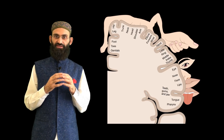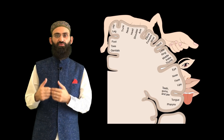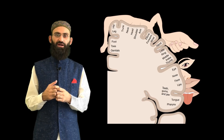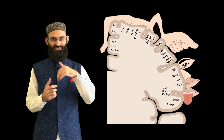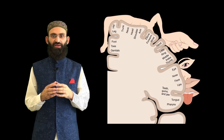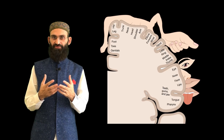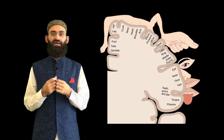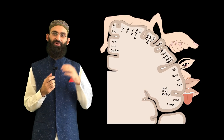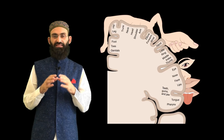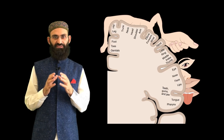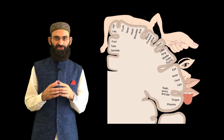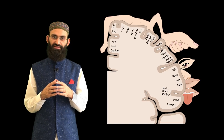The distribution of these pyramidal cells follows a unique topographic pattern. Pyramidal cells innervating lower motor neurons for the lower limb are located on the medial surface, while those innervating lower motor neurons for the upper limb are located on the lateral surface. This topographic distribution has important implications in localization of neurological lesions.